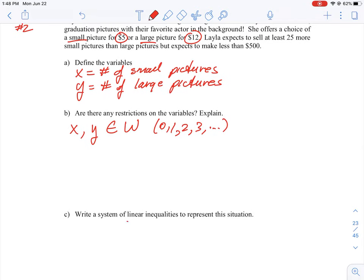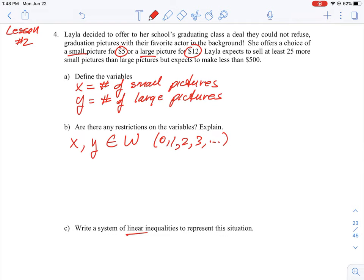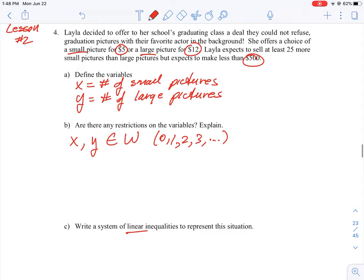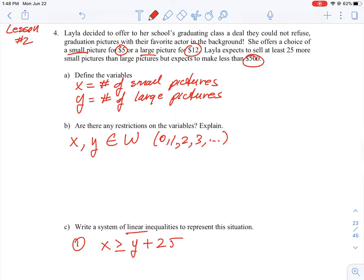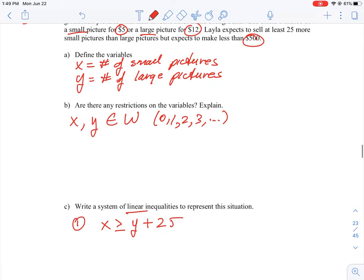We need to write a system of linear equations to represent the situation. We're given the value and we're told how much they're expected to make and then we're also told that Layla expects to sell at least 25 more small pictures than large pictures. So we know the small pictures are x. So one of our equations is going to be x is greater than or equal to y plus 25. Because what we're saying is that the small pictures, we're going to sell 25 more of them. So the x is the bigger number.